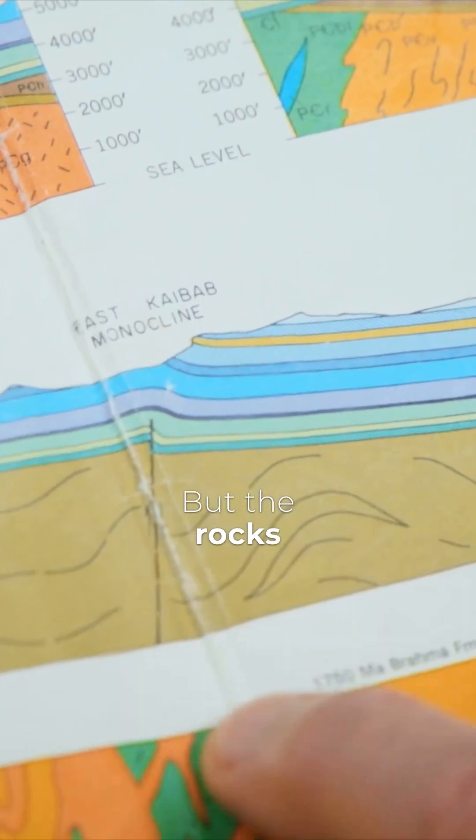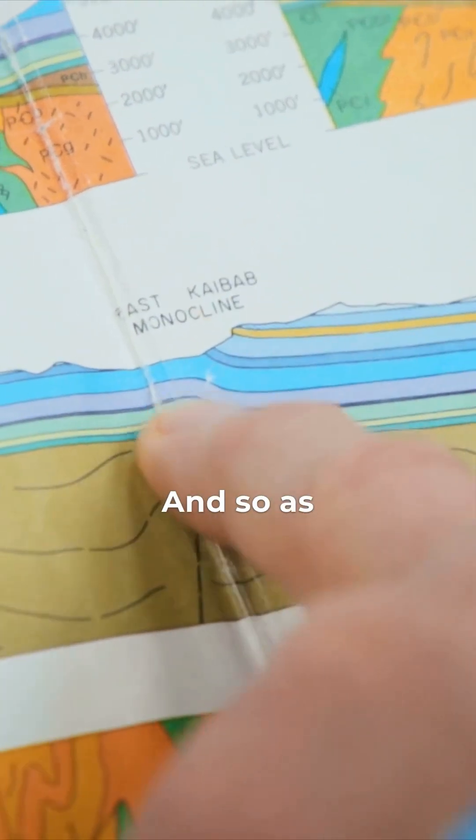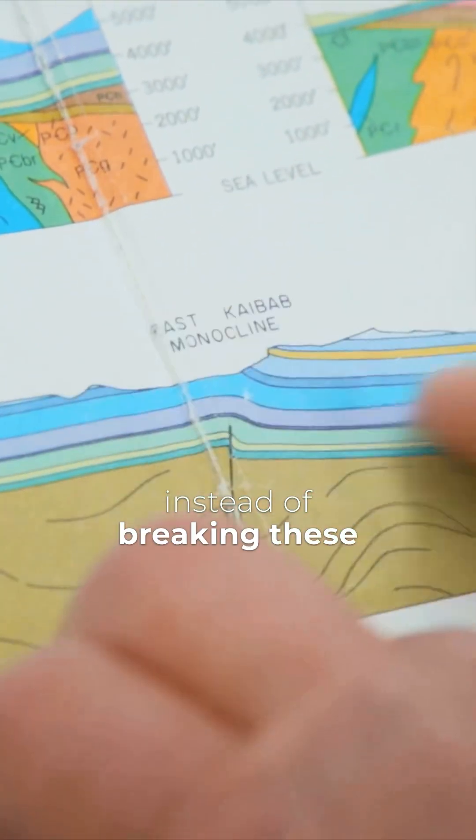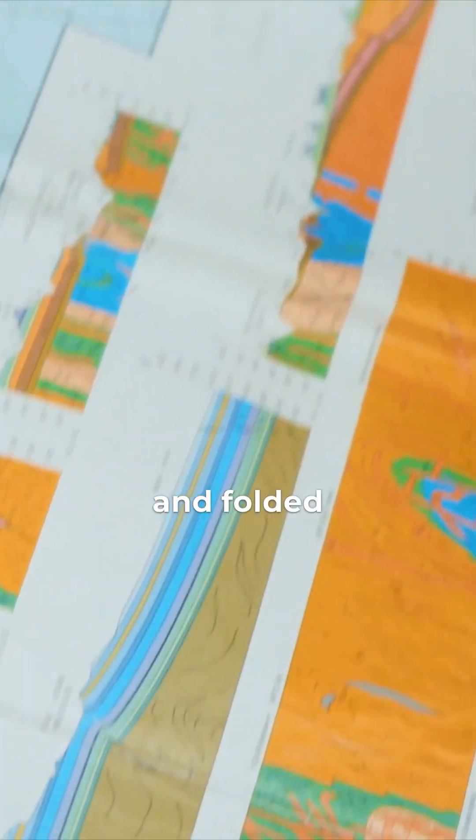But the rocks on top are relatively soft and so as the hard rock pushed the softer rock up above instead of breaking these rocks up here bent and folded.